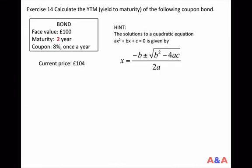Let's look at an exercise. Calculate the yield to maturity of the following coupon bond: face value £100, time to maturity 2 years, coupon rate 8%, coupon payment once a year, and current price £104.